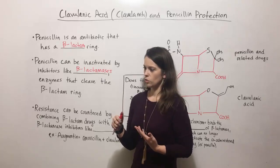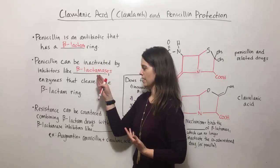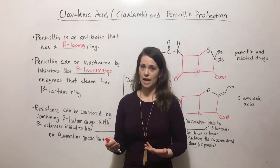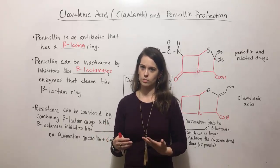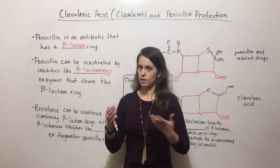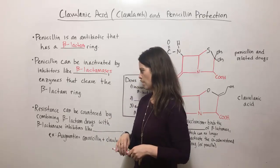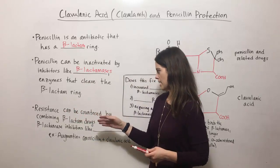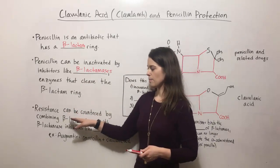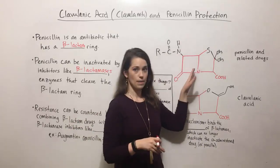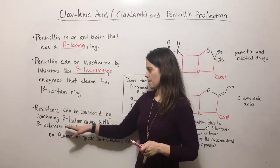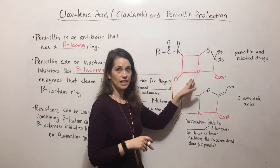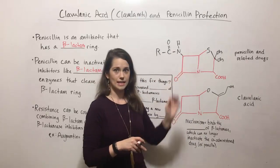Resistance to penicillin is becoming very common because these beta-lactamases are present in so many bacteria now. There are a lot of medical isolates that are resistant to penicillin, so other drugs have to be used instead. Resistance is also growing to those other drugs. Luckily, resistance to penicillin and other structurally related antibiotics can be countered by combining these beta-lactam antibiotics with beta-lactamase inhibitors — compounds that will inhibit the beta-lactamases to keep them from cleaving the beta-lactam ring.